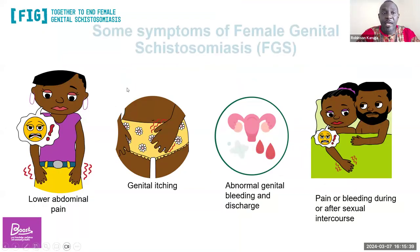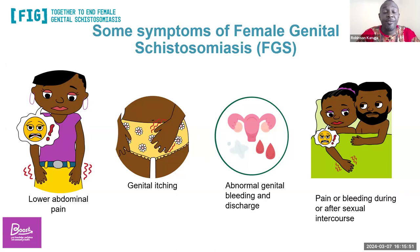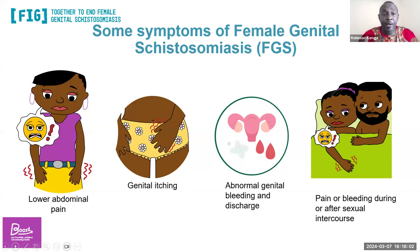The most common symptoms of FGS — most times misdiagnosed as a sexually transmitted infection — include lower abdominal pain, genital itching, abnormal genital bleeding and discharge, and pain or bleeding during or after sexual intercourse.